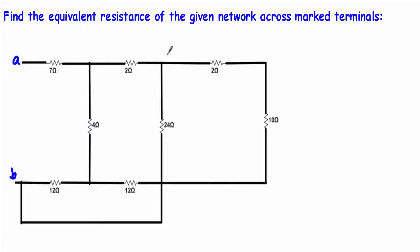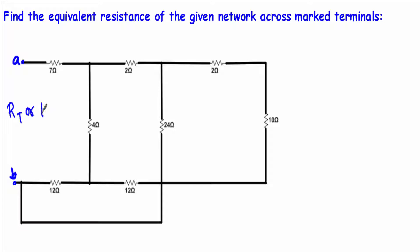In this video I will show you how to simplify a combinational circuit. This circuit is known as a combinational circuit because it contains series and parallel branches of resistors. The question is: find out the equivalent resistance or the total resistance of the given network across the marked terminals A and B. Between these two terminals we have to find out the total resistance.